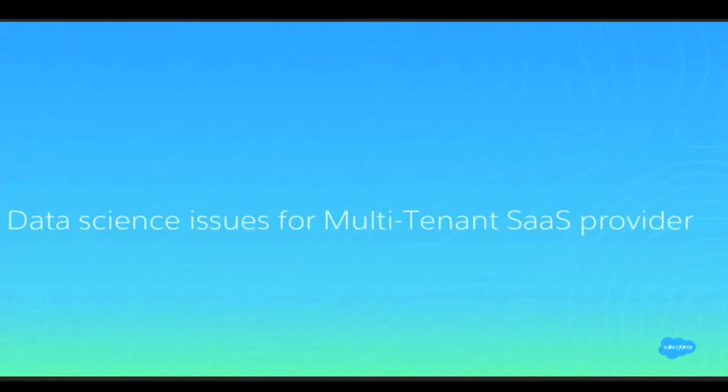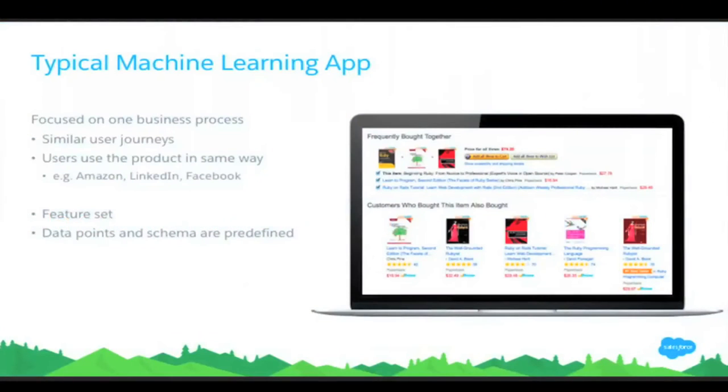Now I'm going to talk about the issues for data science in a multi-tenant environment. If you want to build a machine learning problem, a typical case — like Amazon predicting what you'd like to purchase next — is usually focused on one business process. You know how the users of that platform have a similar journey: you go on Amazon, click stuff, add to cart, look at things, read reviews, then either buy or don't.